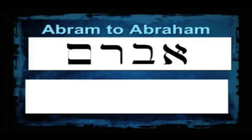Seas and water in Scripture means people or many. Mem is also representative of a womb. So what Abram's name actually meant before it was changed was the strong leader of the house is the head of many — the head of the sea, the sea of people. And that sounds amazing.